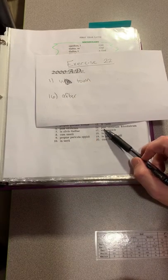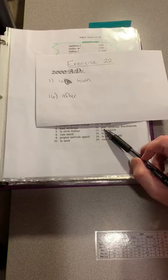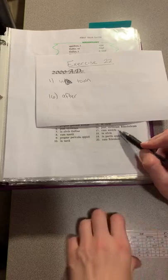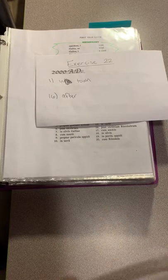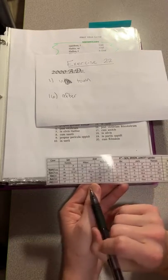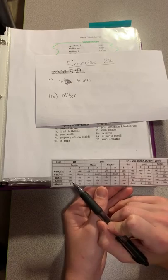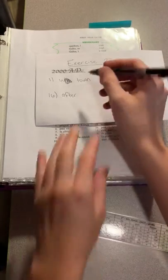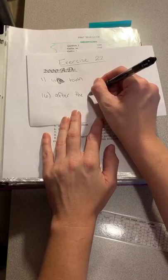It always comes with an accusative, and victorium, or victory is what that means. It's in the accusative position. It has that am after it. So I'm going to put after the victory.